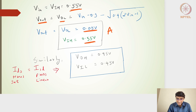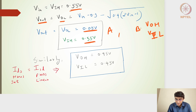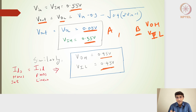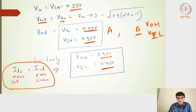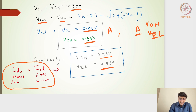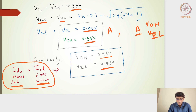Similarly, point B can be found by equating the NMOS saturation current to the PMOS linear current and applying slope = −1. This gives VOH = 0.95V and VIL = 0.45V, using the same values of VDD = 1V and VT = 0.3V. So point B is (VIN, VOUT) = (0.45V, 0.95V).